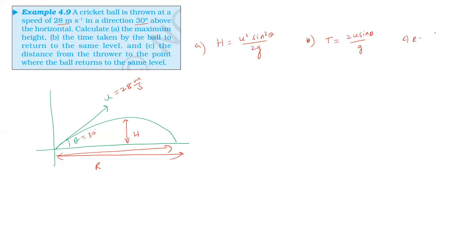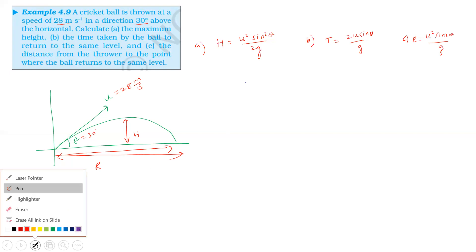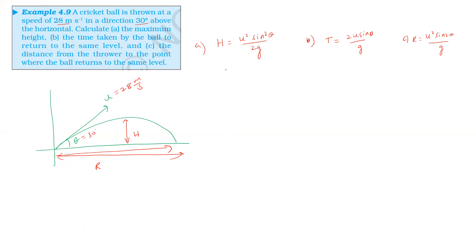The range formula is R = u² sin2θ / g. Now substitute: u is 28, sin 30 is 1/2. U squared sin squared, divided by 2g, where g is 9.8.